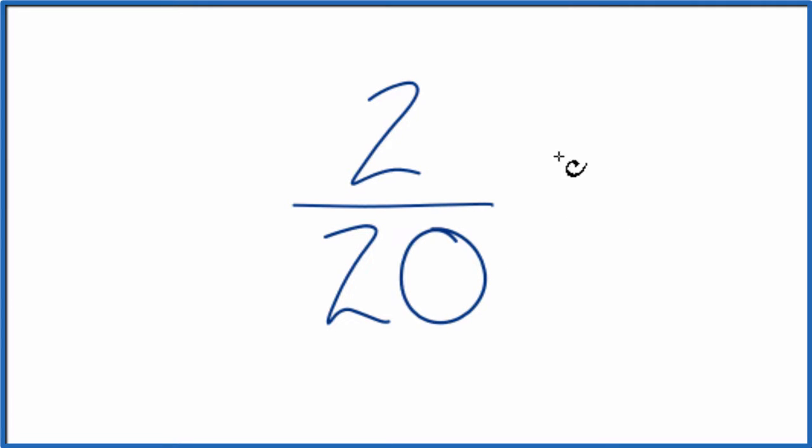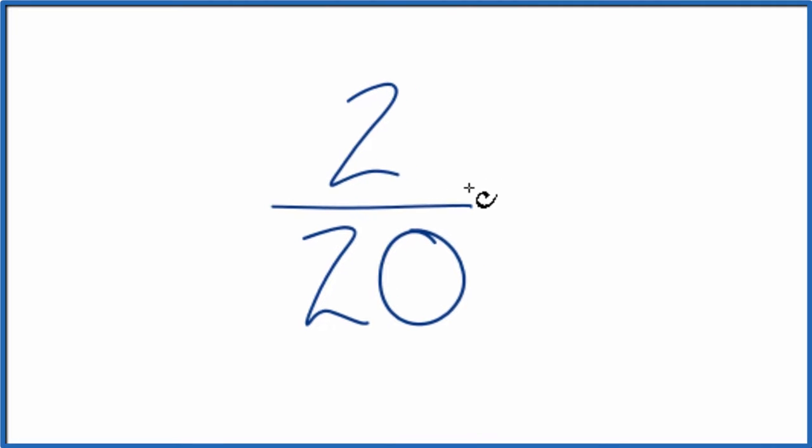So we need to find a common factor, something that goes into the numerator and the denominator evenly. 2 goes into 20 ten times, and we can divide 2 by itself. So the common factor would be 2.